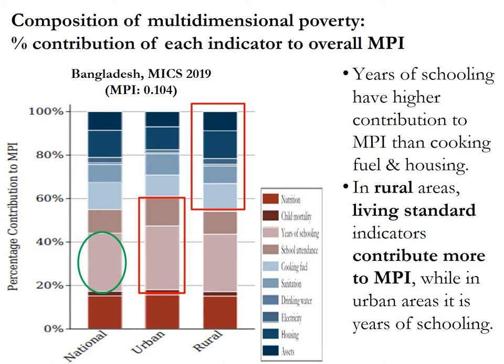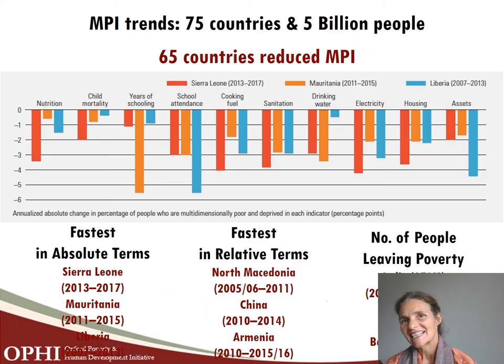When we further disaggregate by rural and urban areas, we find that in rural areas, living standard indicators contribute more to MPI, while in urban areas, years of schooling dominates. This could mean different policy responses in different areas by the government, making the MPI very useful for monitoring the effects of policy shifts and program changes. Sabina will now lead the next discussion.